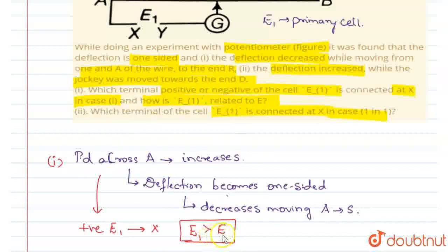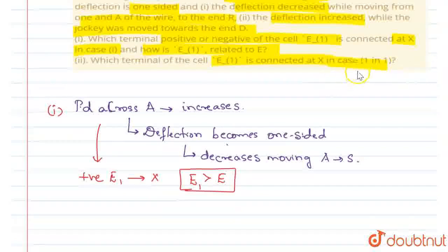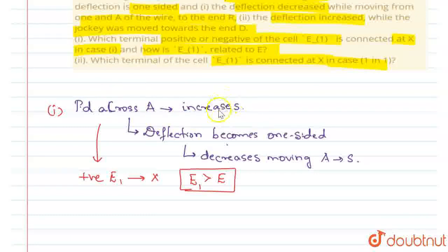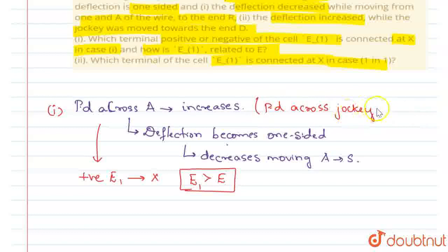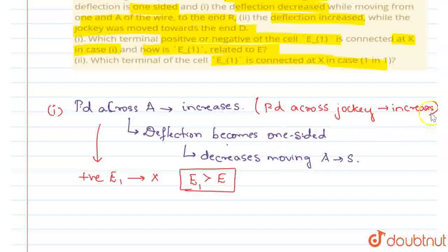So how is E1 related to E? E1 is greater than E. Coming to the second question: which terminal of the cell E1 is connected at X in case 2? If the current in the primary circuit increases, the potential difference across A also increases. At the same time, the potential difference across the jockey also increases because the jockey is being moved towards end A. So the potential difference across the jockey increases, and the deflection in the galvanometer becomes one-sided.